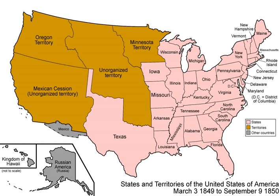He announced on the Senate floor the next day that he intended to pass each individual part of the bill. The 73-year-old Clay, however, was physically exhausted as the effects of tuberculosis, which would eventually kill him, began to take their toll. Clay left the Senate to recuperate in Newport, Rhode Island, and Stephen A. Douglas wrote the separate bills and guided them through the Senate.